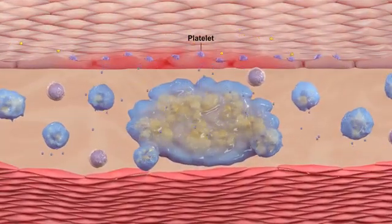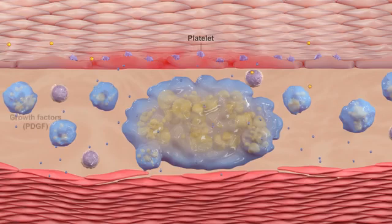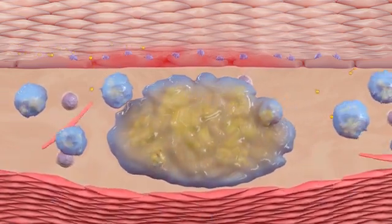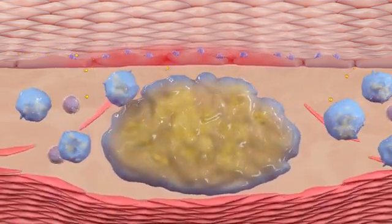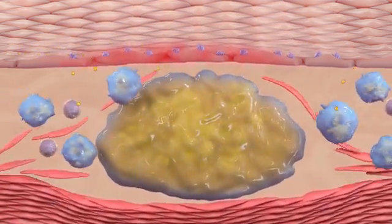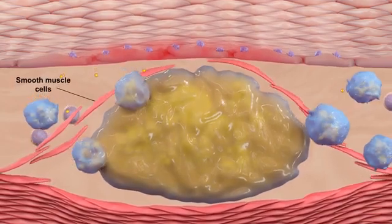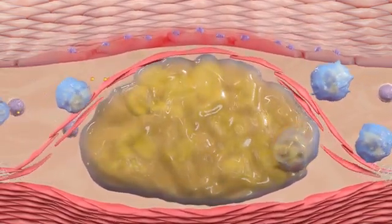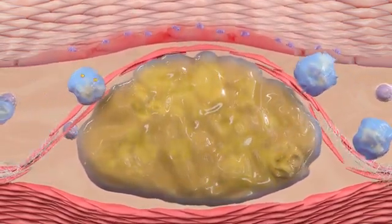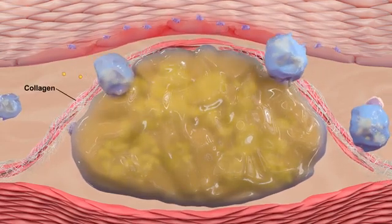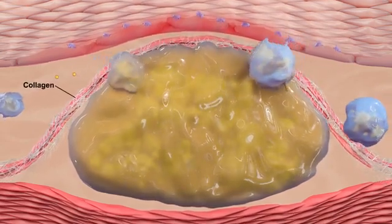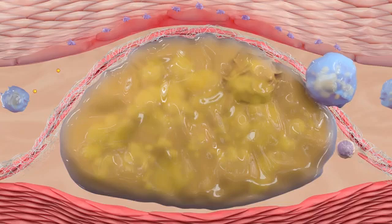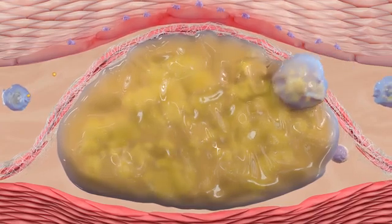As the disease progresses, growth factors released by surrounding cells promote migration and proliferation of vascular smooth muscle cells into the intima. The infiltrating smooth muscle cells secrete collagen and proteoglycans that form a fibro-fatty plaque, also known as a mature atheroma.